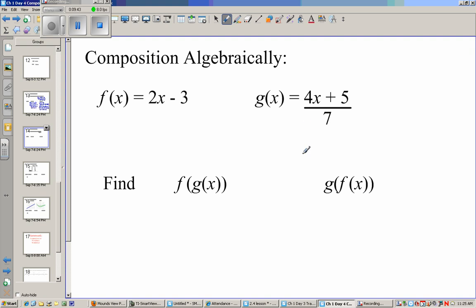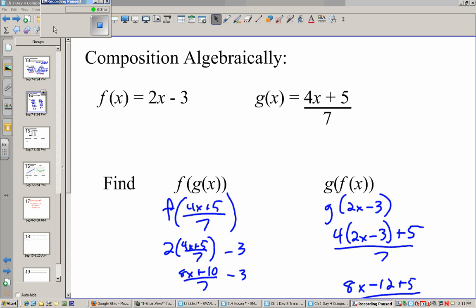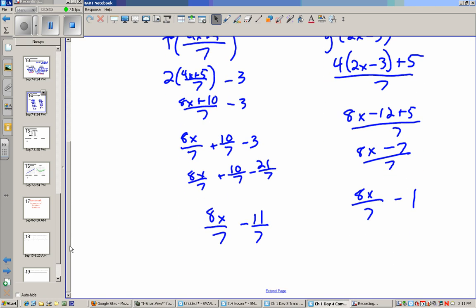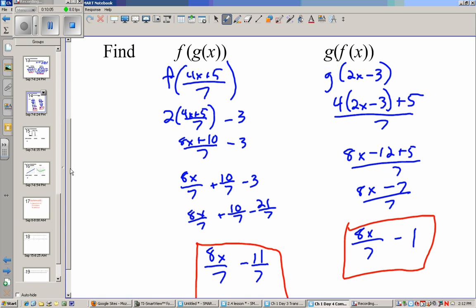Now I'll let you guys do these algebraically. Pause the video and see what you get. Alright, I paused it myself and I went through the problems. The final answers: 8x over 7 minus 11 sevenths, and 8x over 7 minus 1. Now, the biggest mistake people will make is stopping here. And you can simplify this a little bit further. Because this is 10 sevenths minus 3, and 10 sevenths minus 3 would be 10 sevenths minus 21 sevenths, which is negative 11 sevenths.